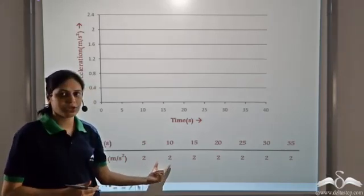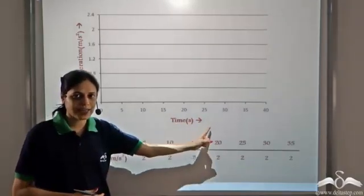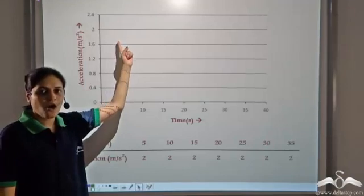Now we plot this information on a graph. We take time on the horizontal axis or the x-axis and acceleration on the vertical axis or y-axis.